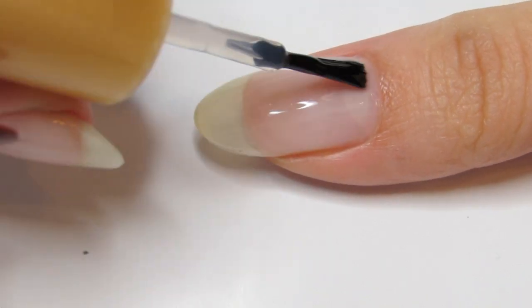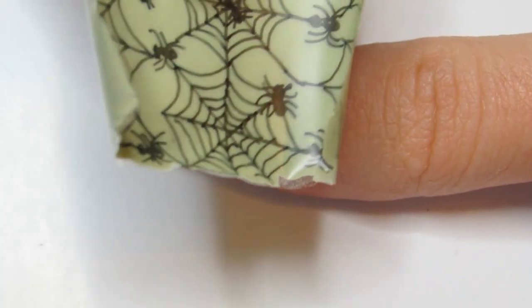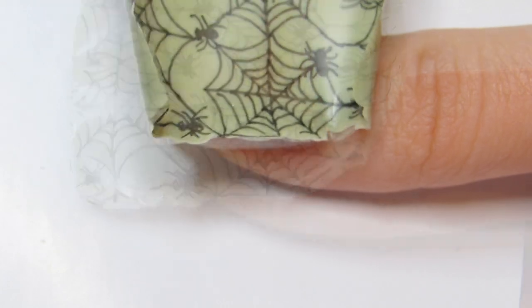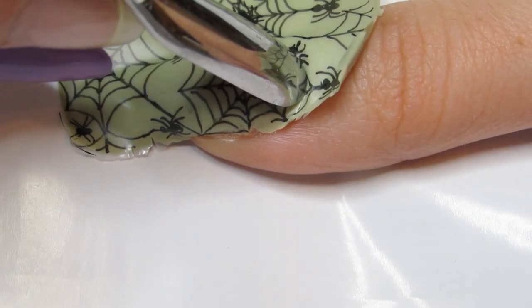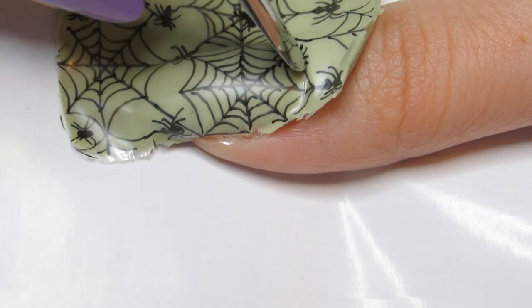After prepping your nails, paint a layer of base coat on one nail at a time. Before it dries, place your sticker design side up on your nail. Smooth on the sticker, and with a cuticle pusher, gently press in the border of your nail bed.